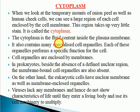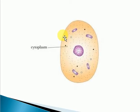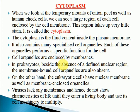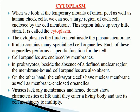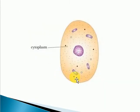The cytoplasm is the fluid content inside the plasma membrane. Inside the plasma membrane, cytoplasm is present. It also contains many special cell organelles. Each of these organelles performs a specific function for the cell, and all the organelles are enclosed by membranes. Cell organelles like mitochondria, chloroplasts, ribosomes, and endoplasmic reticulum are all present in the cytoplasm and have different functions.